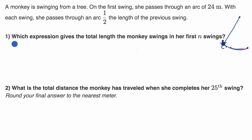So let's look at the first choice. Which expression gives the total length the monkey swings in her first n swings? So pause the video and see if you can do that. And you can express it actually two ways. Express it as a geometric series, but also express it as the sum of a geometric series, if we were to actually evaluate it.